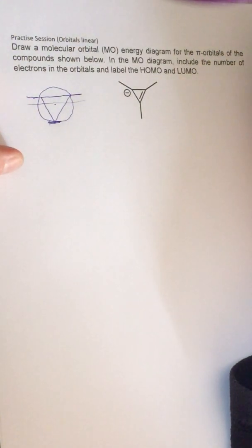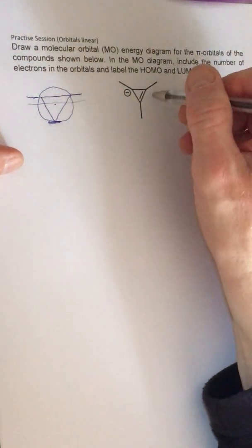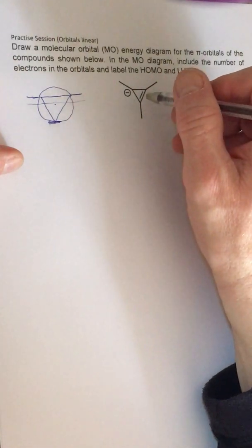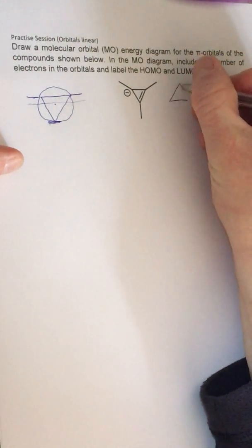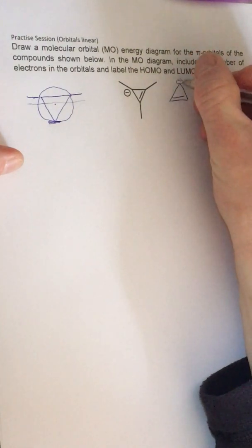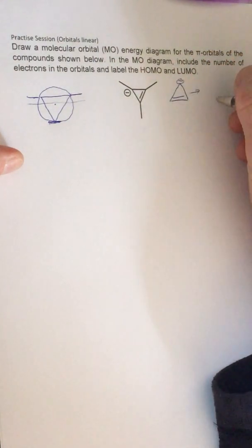Remember, the key thing is whatever shape you get—it could be drawn like that—you've got to remember to do it with the vertex at the bottom for the Frost circle.